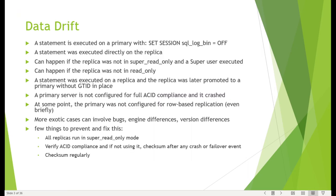What could be the possible reason when data drift happens? Data drift means any changes in the data on the replica side which are not available on the master side. For example, a statement executed on the primary with SQL_LOG_BIN set to OFF - any statement not written into the binary log will not be replicated to the replica side, causing data drift.